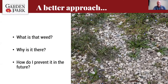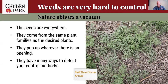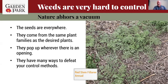A better approach: what is that weed, why is it there, and how do I prevent it from growing there in the future? Nature abhors a vacuum — it's a trite saying but it's really true. There can't be nothing in a spot. If there is, something's going to take that spot over, and usually that is going to be the most aggressive, persistent plants out there, and those are usually our weeds.